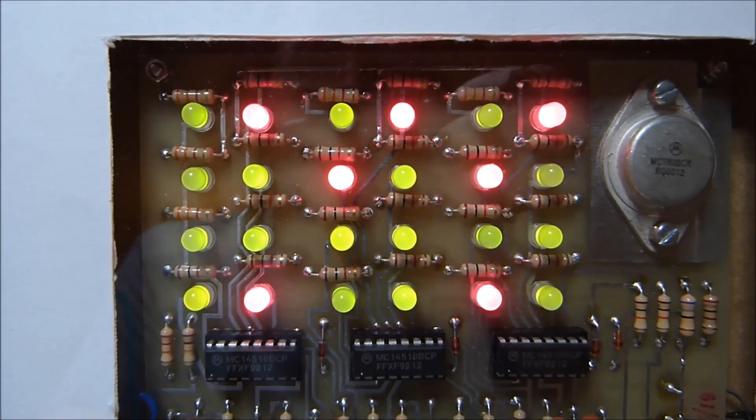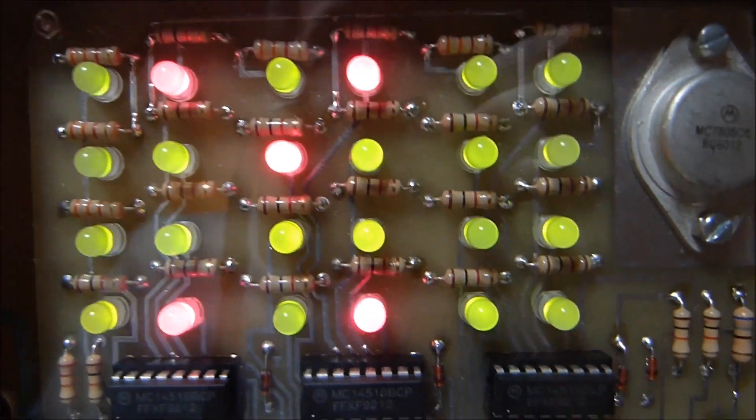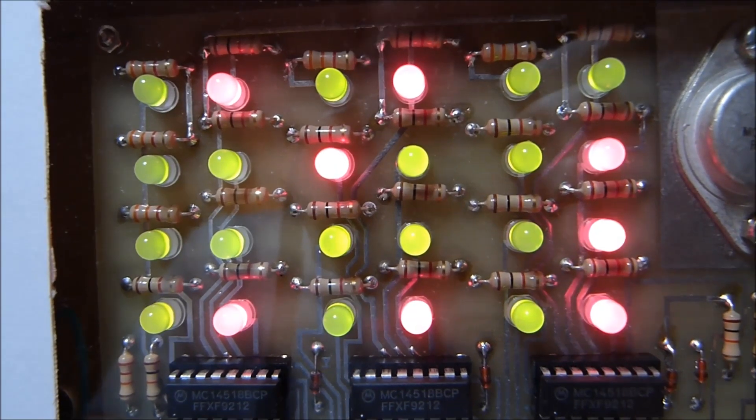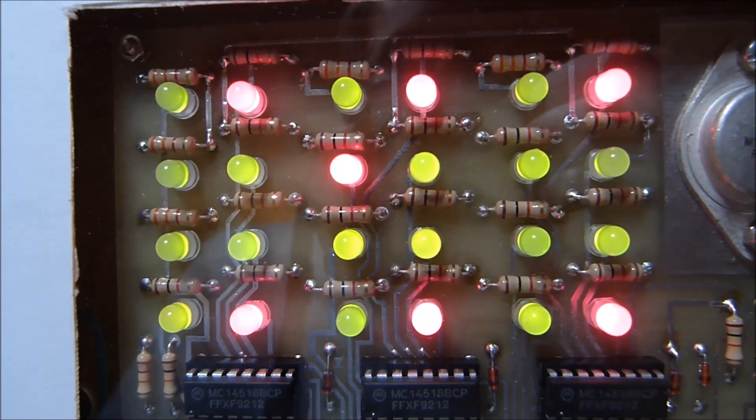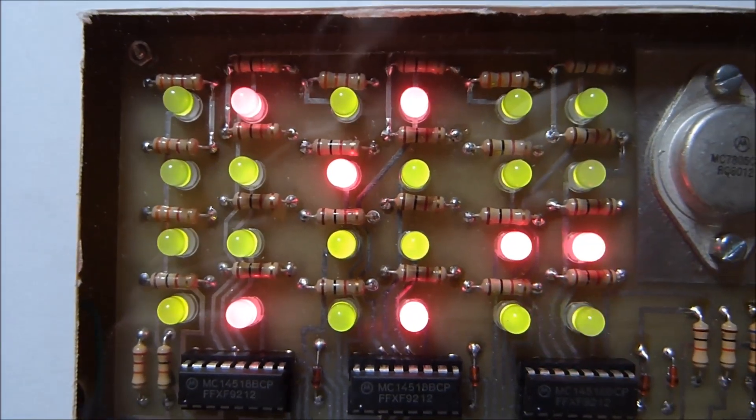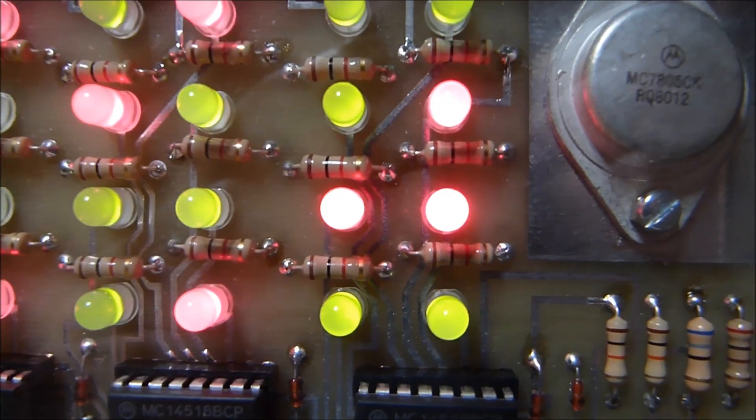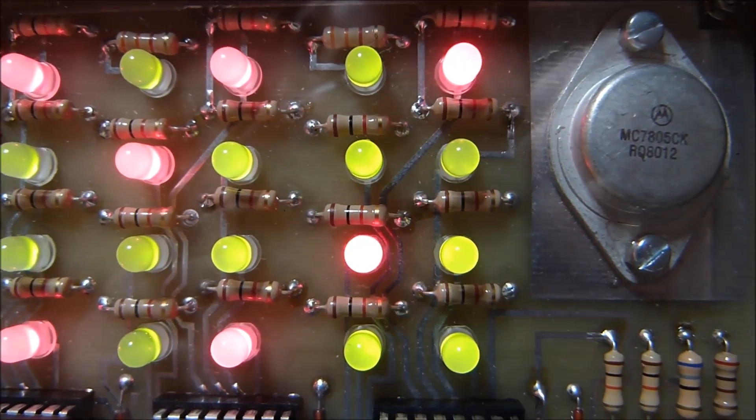It's displaying the time in binary, or more specifically binary coded decimal. Red indicates on and green indicates off. I know that's kind of the opposite of the traditional color scheme, but that's the way this clock was designed.